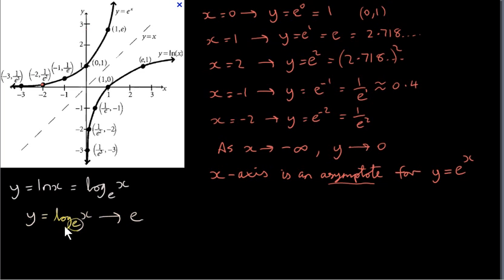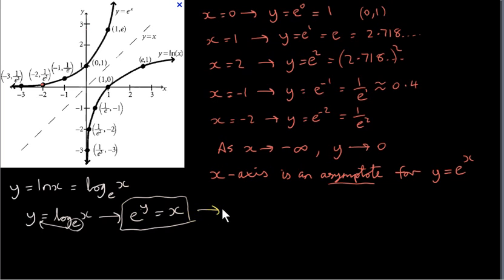If we put this base to the power of this number, we get the argument of the log function. In this function, x is the dependent variable depending on y, but we can interchange these to make y the dependent variable: y equals e to the x. So the function y equals log to the base e of x is the inverse function of y equals e to the power of x. That means, since (0,1) is a point on the graph of y equals e to the power of x, then (1,0) — swapping those coordinates — will be a point on the graph of y equals ln of x.